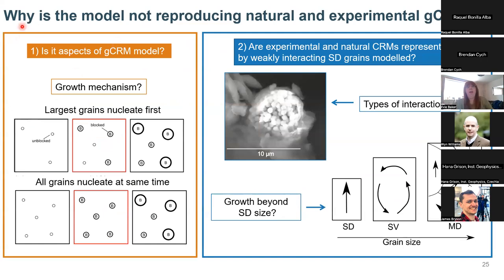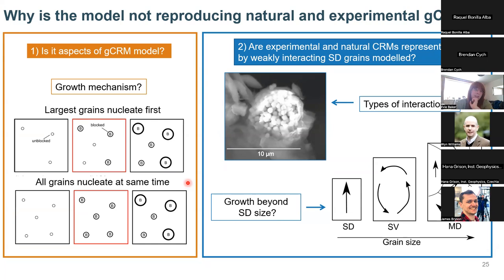This made me think: why is the model not representing natural and experimental samples? There are two general possibilities. One is an aspect of the model — I thought it could be the growth mechanism. In the model, all the largest grains nucleate first and then all finish growing at the final time, which means a lot of the larger grains tend to block earlier. A lot of previous studies of greigite formation have theorized burst nucleation — all grains nucleate at once. I tested this, and depending on which growth mechanism I used, I found maybe a 5% difference in intensity. So this wasn't having a significant effect — it only affected the lowest coercivity grains.